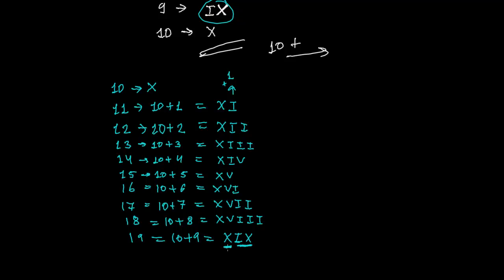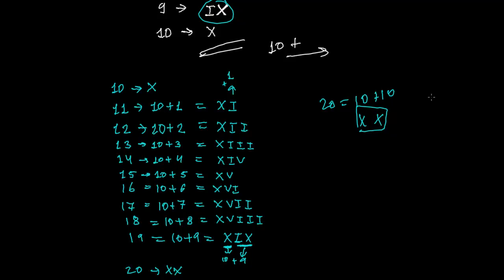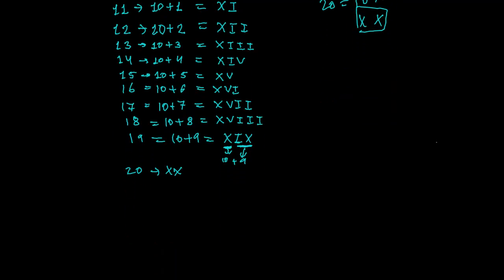So XIX represents 19: the first X is 10, and IX together represents 9, giving 10 plus 9. For 20, it's simply 10 plus 10, so we write XX — two X's together represent 20.